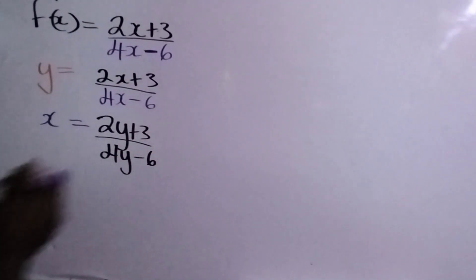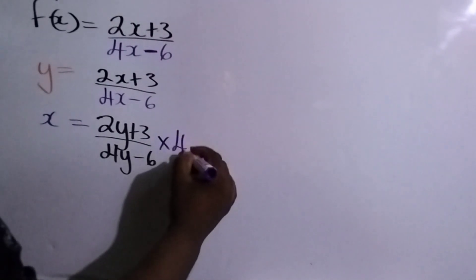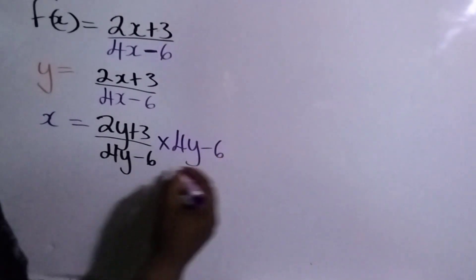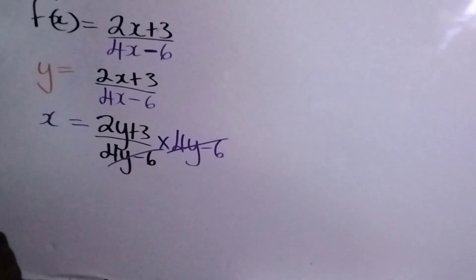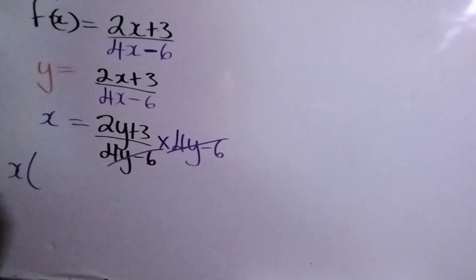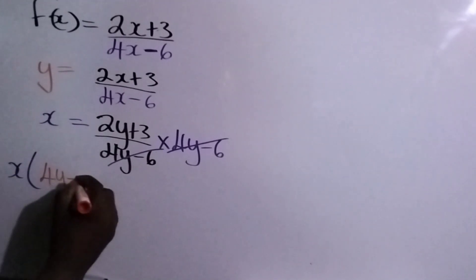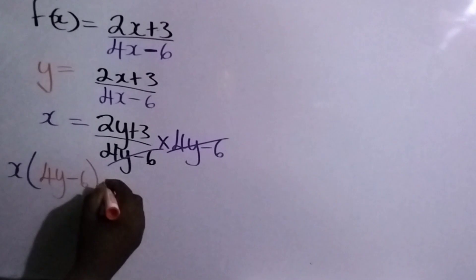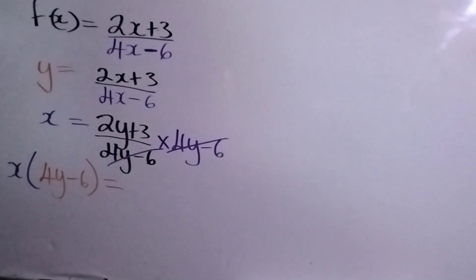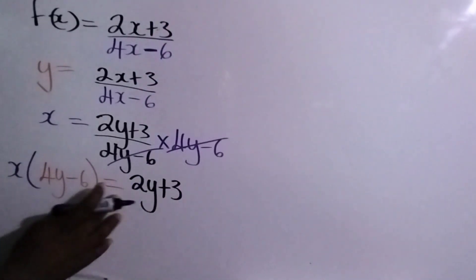So the first thing you want to do is get rid of the denominator, which is 4y minus 6. This is dividing, so the opposite would be to multiply by 4y minus 6. So that's going to cancel. Remember it's an equation, so anything we do for one we're going to do for all. So then we're going to multiply this 4y minus 6.